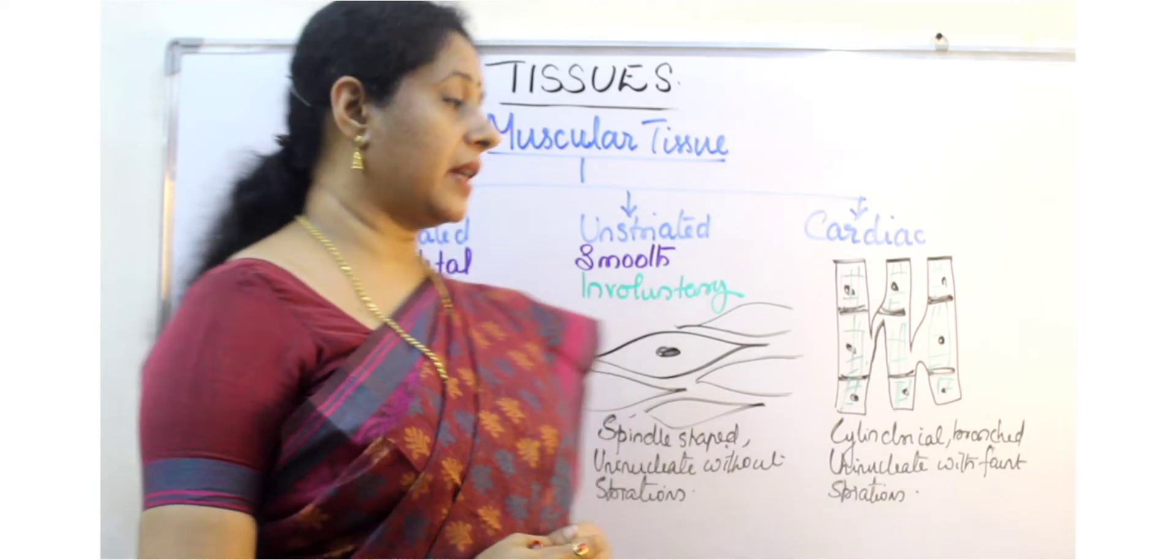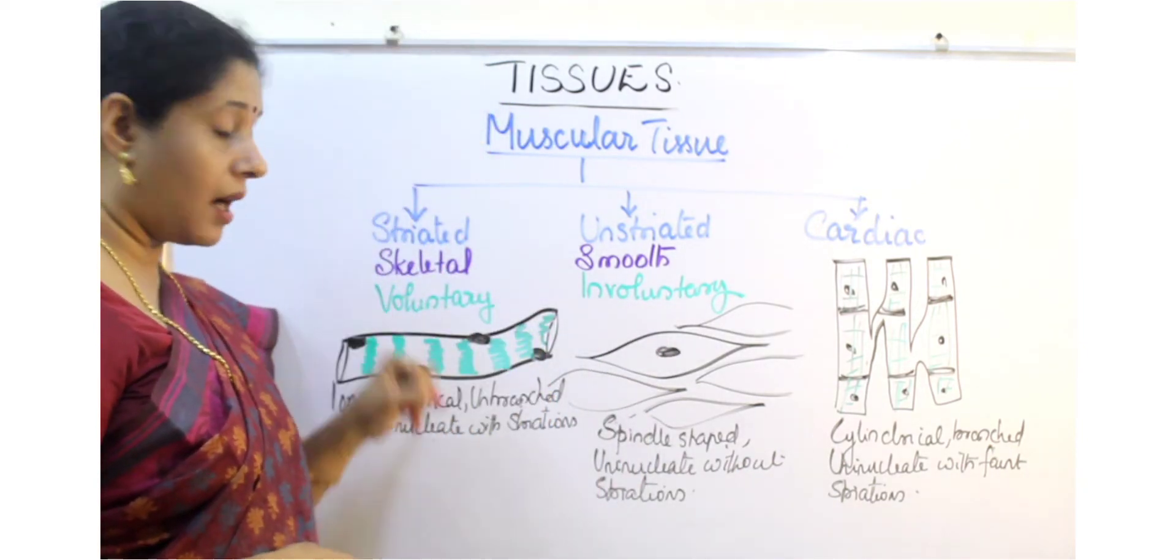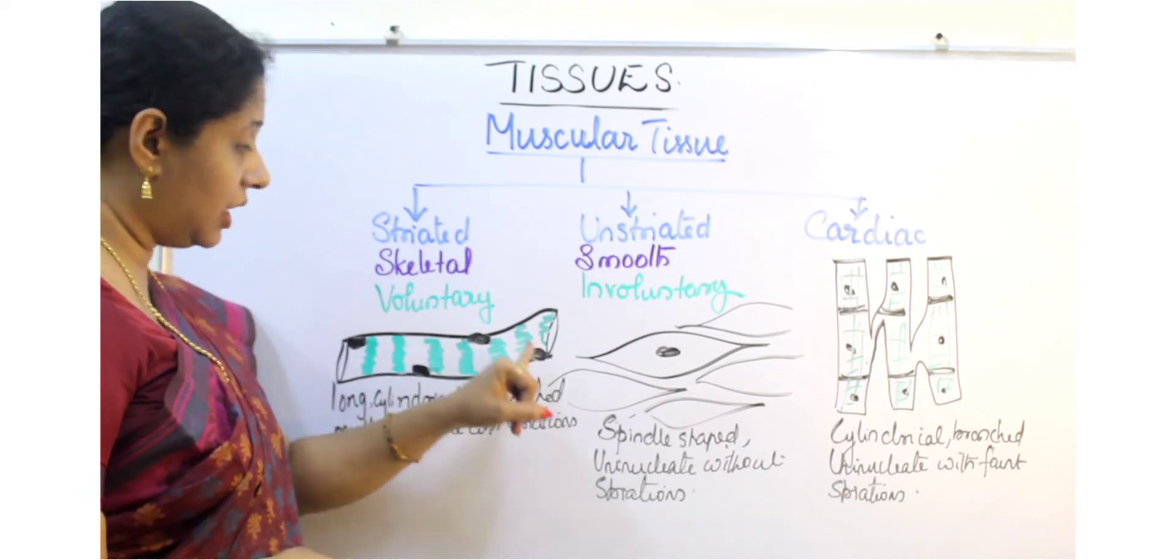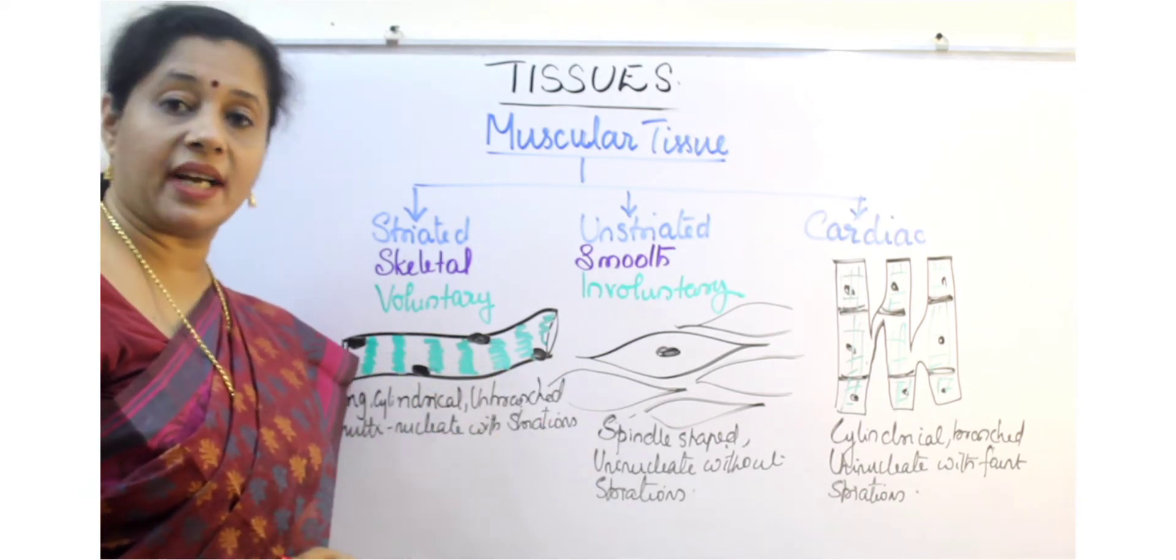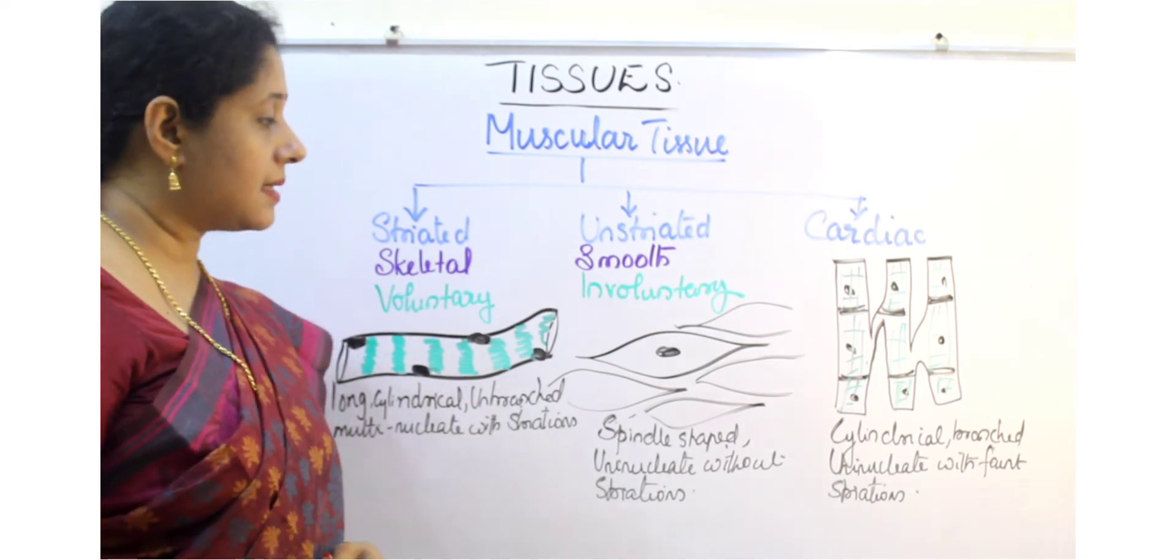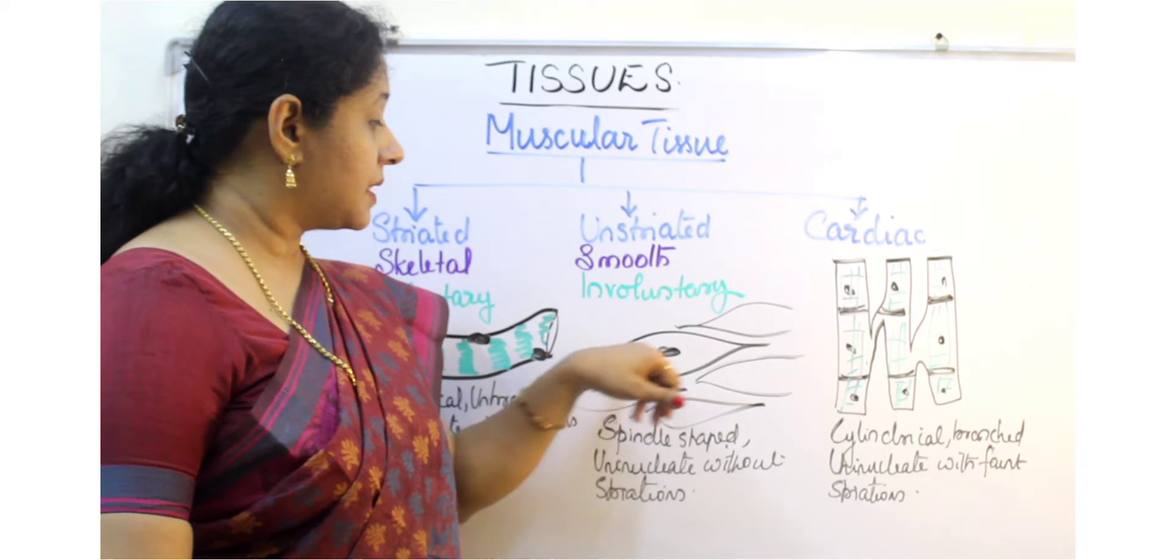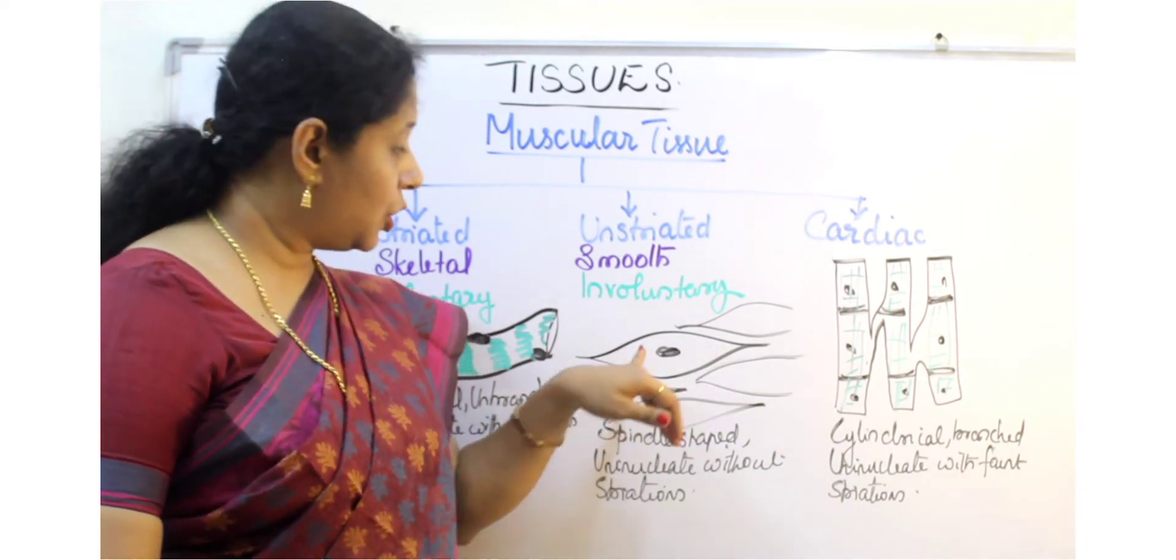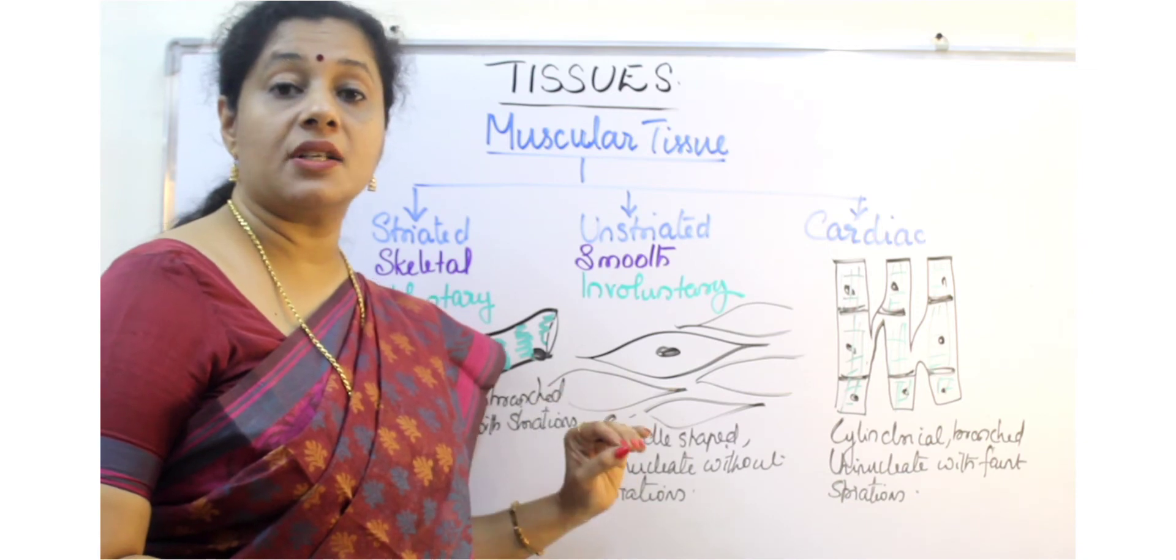When we discuss their structure, the skeletal muscles are cylindrical, unbranched, and multi-nucleate. You can see many nuclei here with dark and light striations on them. Whereas involuntary muscles are spindle-shaped, uni-nucleate, without dark or light striations.